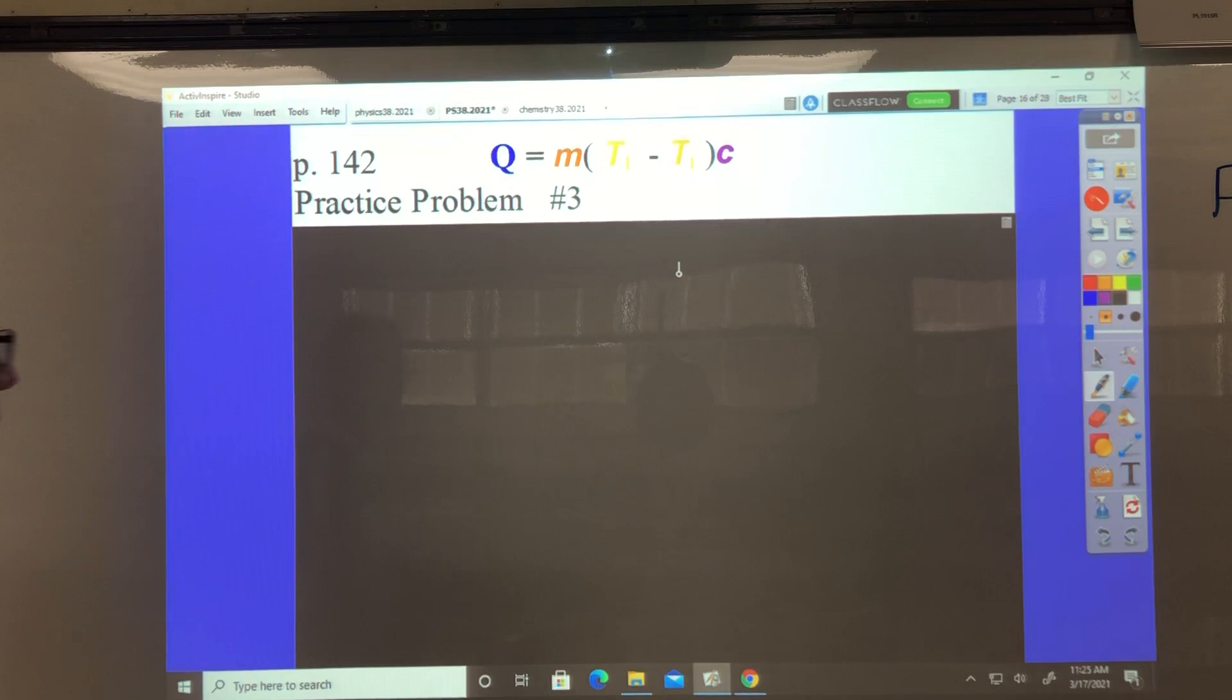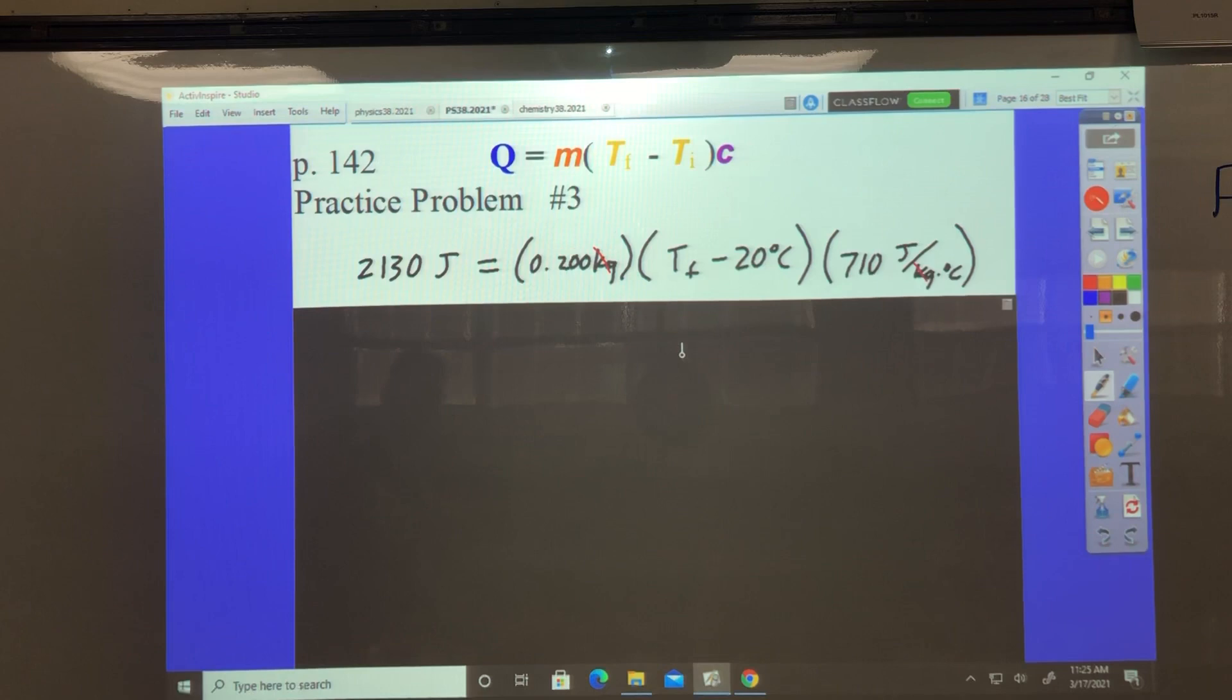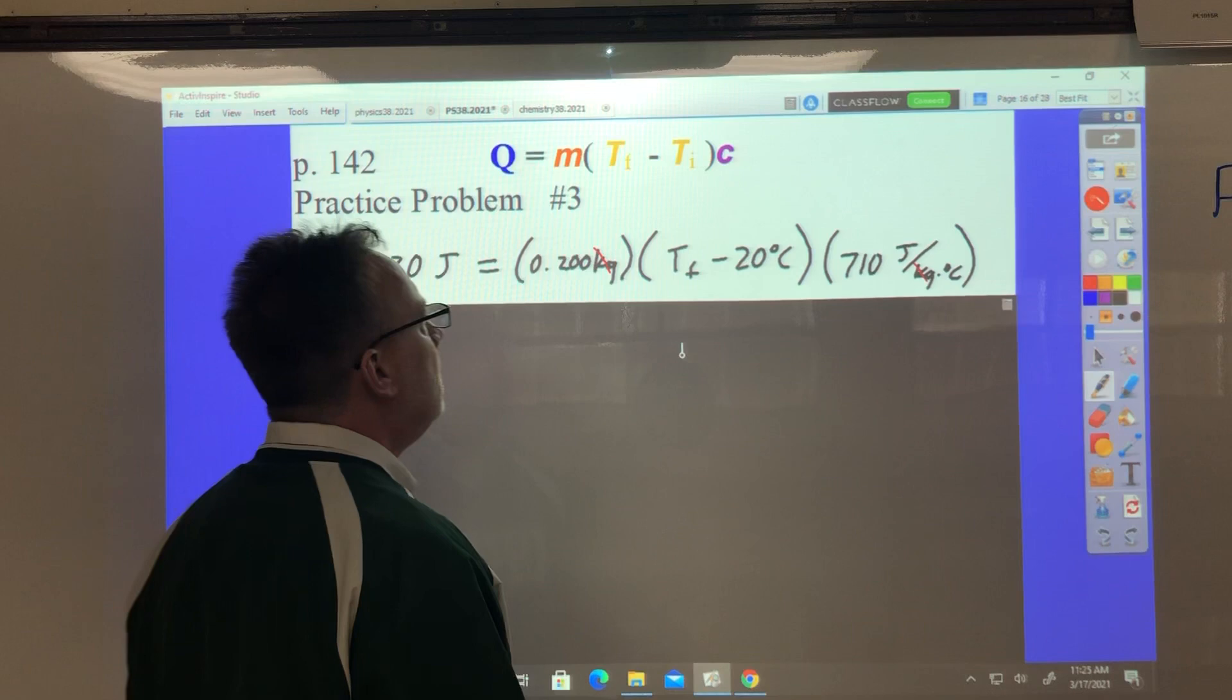So where do these numbers go? The 0.2 kilograms goes for mass. Specific heat of 710 goes here. Temperature of 20 degrees Celsius is temperature initial. And 2,130 joules goes here. So it looks like this starting out.